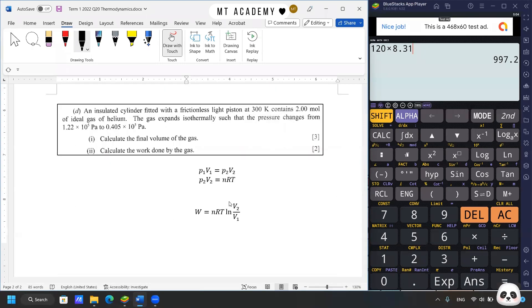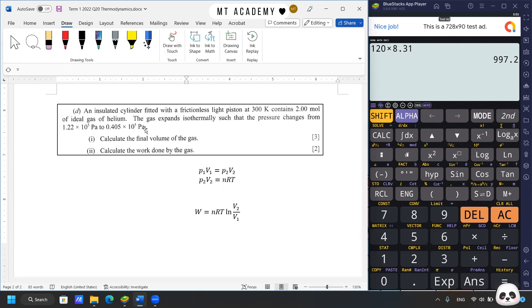An insulated cylinder fitted with a frictionless piston at 300 Kelvin contains 2 moles of ideal helium gas. The gas expands isothermally and the pressure changes. This is the third confusion. We mentioned insulated cylinder, which should be adiabatic, but also mentioned isothermally. These two are contradictions. For my interpretation, the cylinder is insulated but not perfectly insulated. I will solve this based on isothermal process. Another reason is the value of gamma is not given. I will solve this as isothermal since it's clearly mentioned in the question.